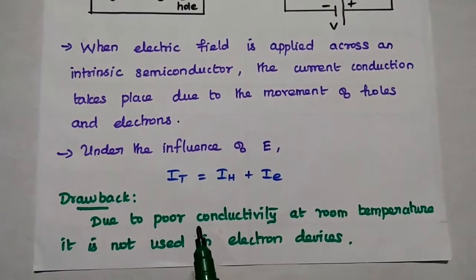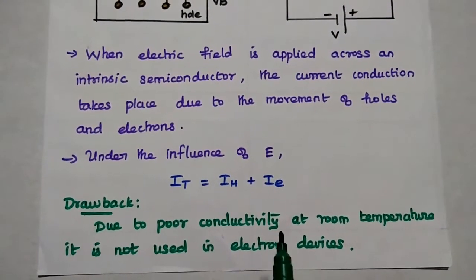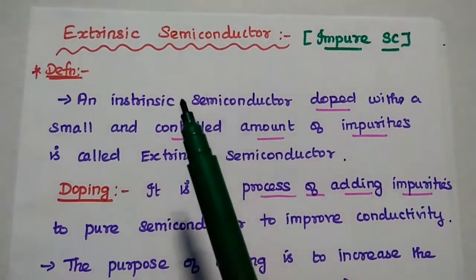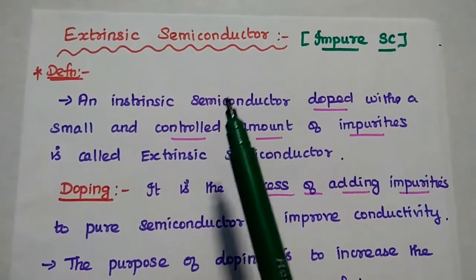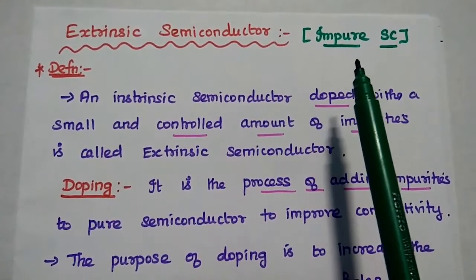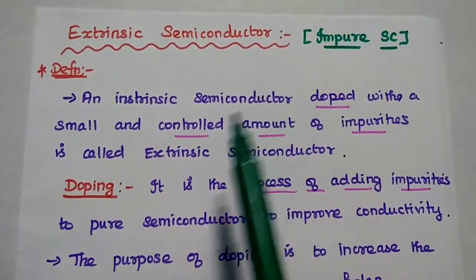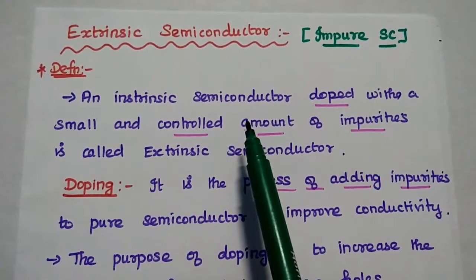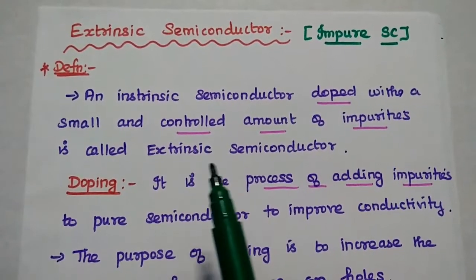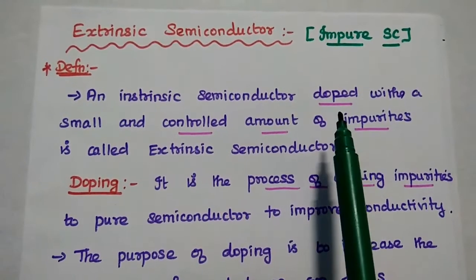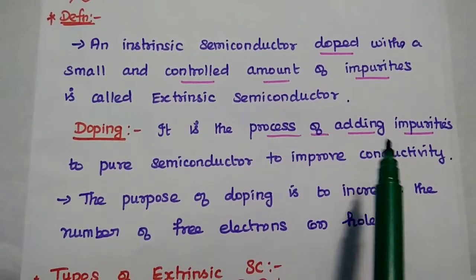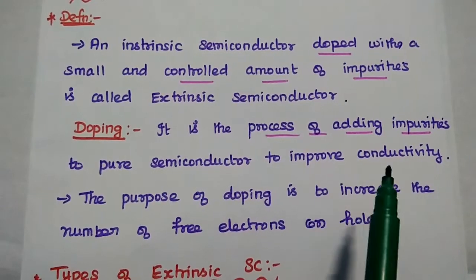The major drawback of intrinsic semiconductor is its poor conductivity at room temperature, so it is not used in electronic devices. Next, we discuss extrinsic semiconductor, also called impure semiconductor. It is obtained by adding impurities to the pure semiconductor. An intrinsic semiconductor doped with a small and controlled amount of impurities is called an extrinsic semiconductor.